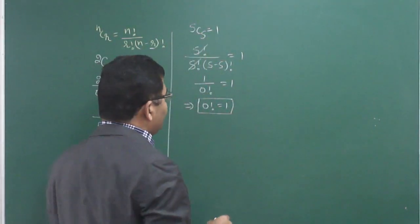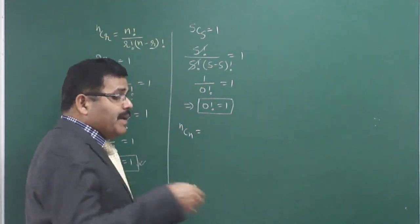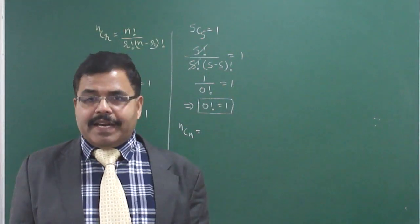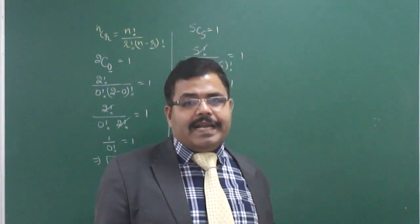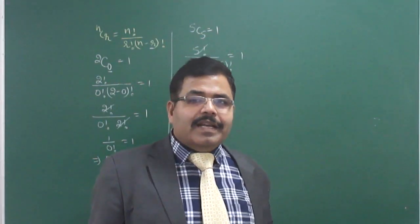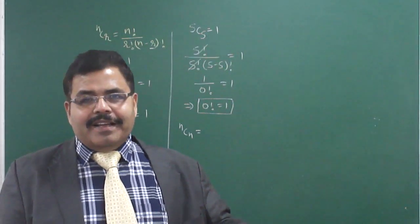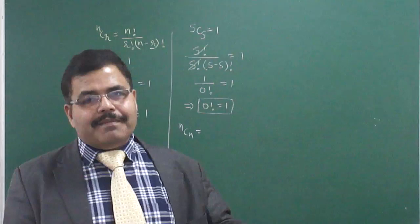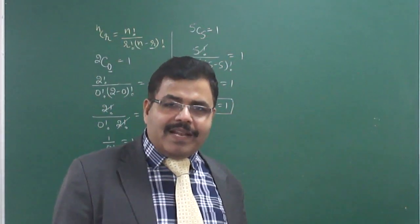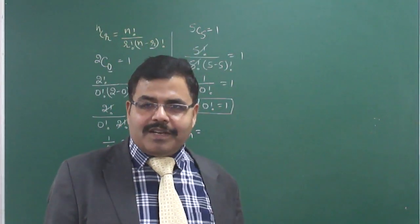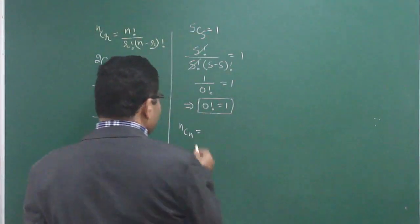Similarly, 5C5 — if you have 5 things and all 5 are to be selected, there is only one way. For example, if 5 persons appear for an interview and there are 5 vacant posts, all 5 are to be selected — there is no choice involved. So NCN = 1. By the formula: N! / (N! × 0!) = 1/1 = 1, confirming NCN equals 1.